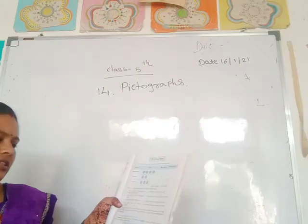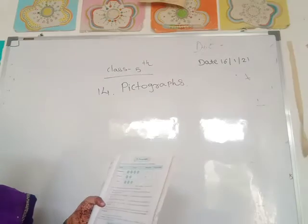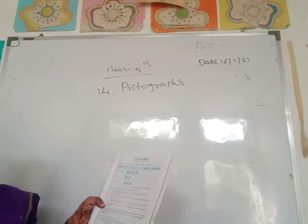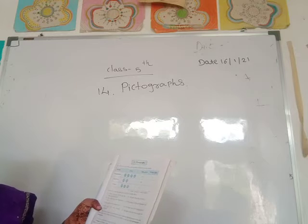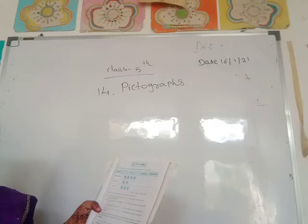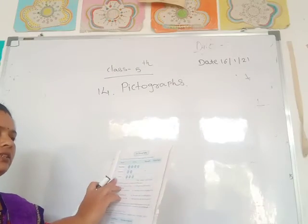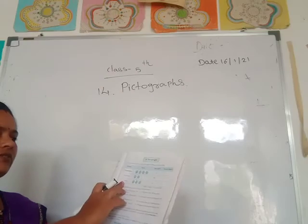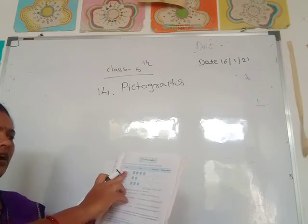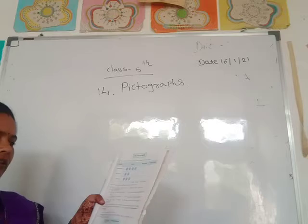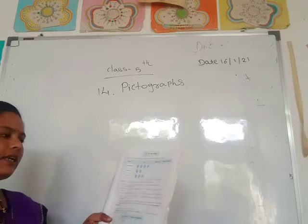First question: about how many ballers does the table give information? How many ballers? Only 3 ballers.